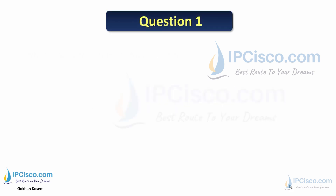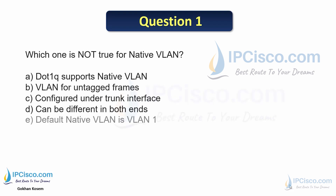Question 1: Which statement is not true for native VLAN? The options are: 802.1Q supports native VLAN; VLAN for untagged frames configured under a trunk interface can be different at both ends; and the default native VLAN is VLAN 1. The answer is B — native VLAN configuration must match at both ends of the trunk.